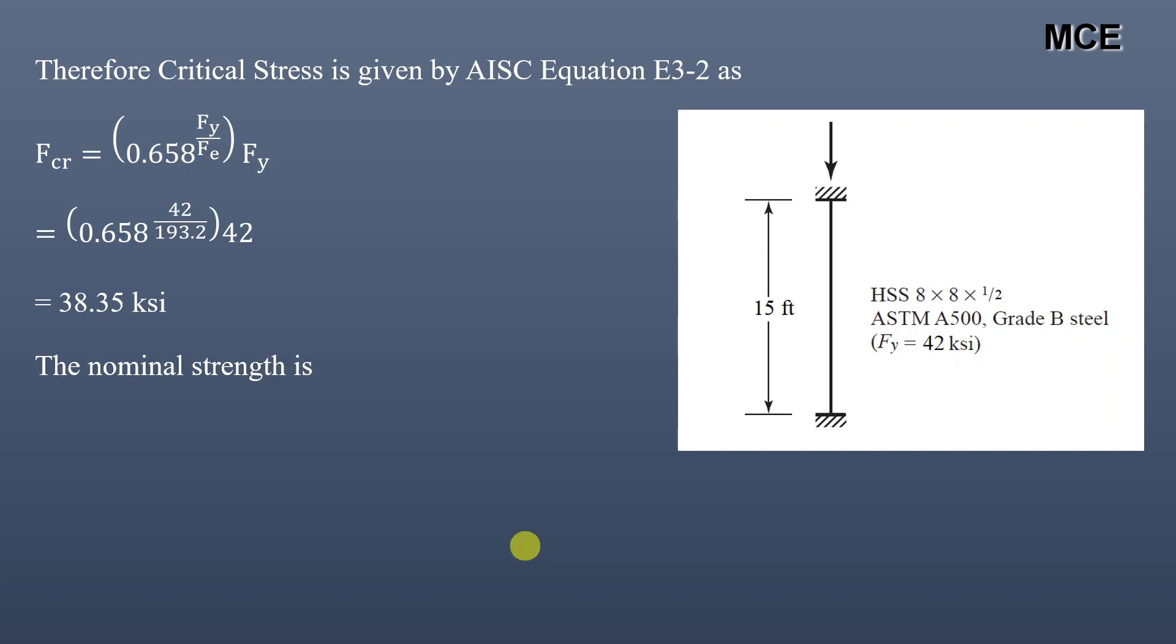Now the nominal strength of column is given as Pn is equal to critical stress times the gross sectional area, that is 38.35 times 13.5, which is equal to 517.73 kips. So this is the nominal strength of the column.